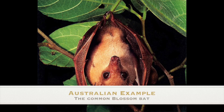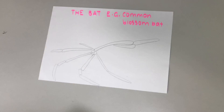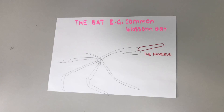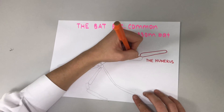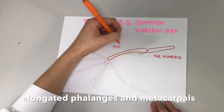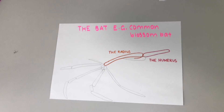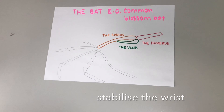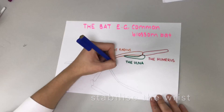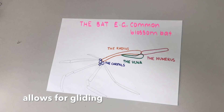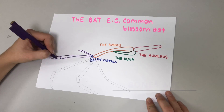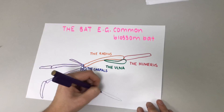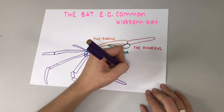Bats also have the pentadactyl structure present within their wings. Although due to varying natural pressures, the structure of the limb is very different, especially in comparison to other animals that fly, such as the magpie. The bat's pentadactyl limb has elongated phalanges and metacarpals. These are present to assist the bat in flying and gliding. The elongated phalanges and metacarpals support the wings, make the wrists increasingly stable, supporting their overall flight motion, and allowing for gliding to be more efficient. The bones within the structure are also lighter and more brittle, although this can be dangerous to the bat. It is generally of benefit due to the fact that it decreases the weight of the bones, making flying more effective.